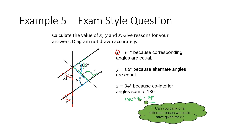Can you think of a different reason for Z? Y and Z are on a straight line, and angles on a straight line equal 180 degrees. So if Y is 86, we can do 180 take away 86, which also gives 94 degrees. So we could also say the reason for Z is that Y and Z are on a straight line adding to 180 degrees.